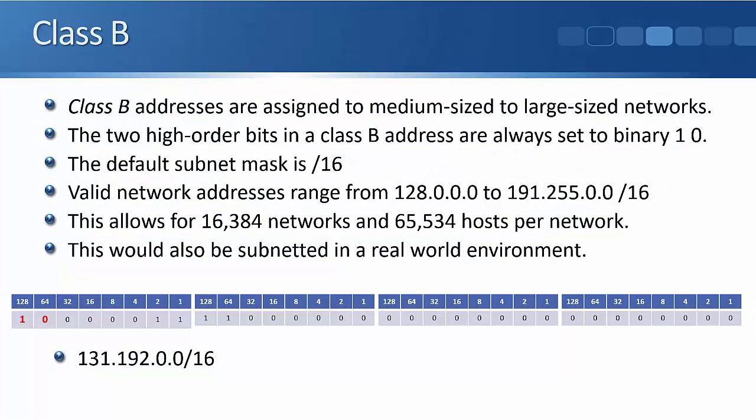Okay, we covered the class A addresses. Next up is class B. Class B addresses were originally assigned to medium to large sized networks. With class B, the first two bits in the address are always going to be set to 1, 0.